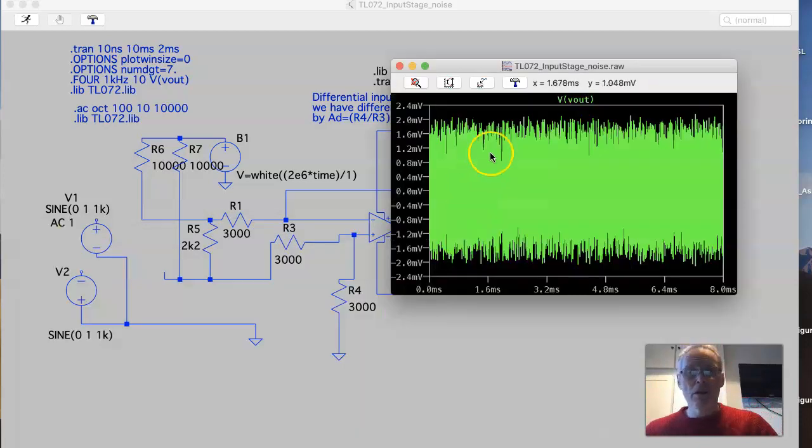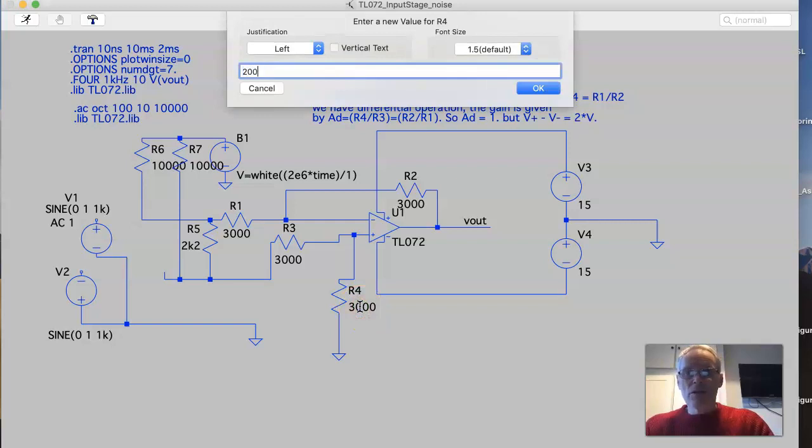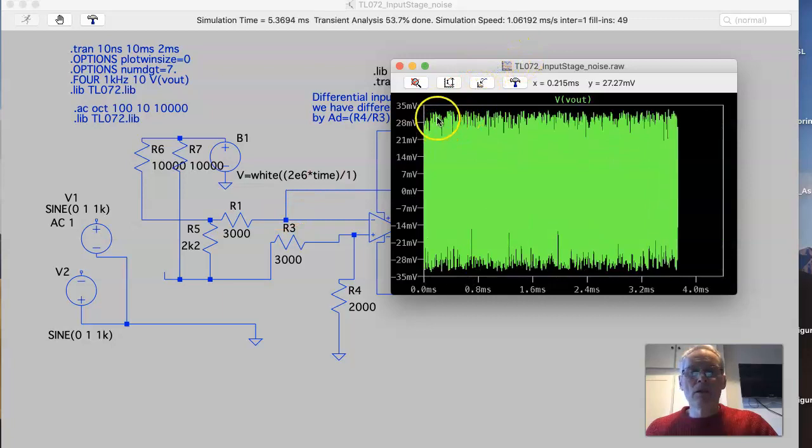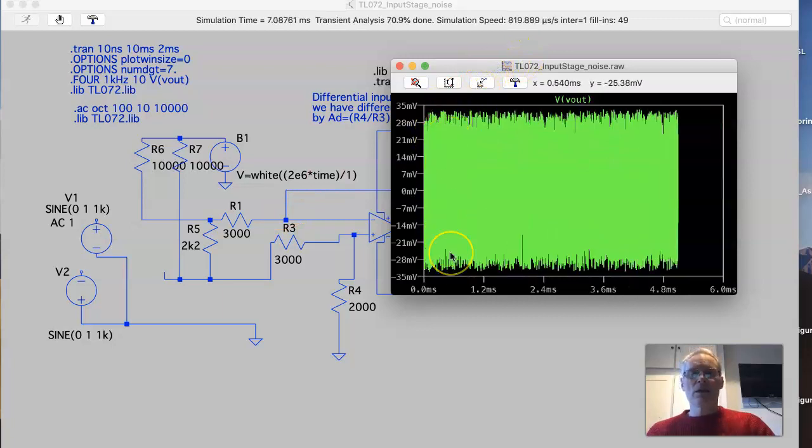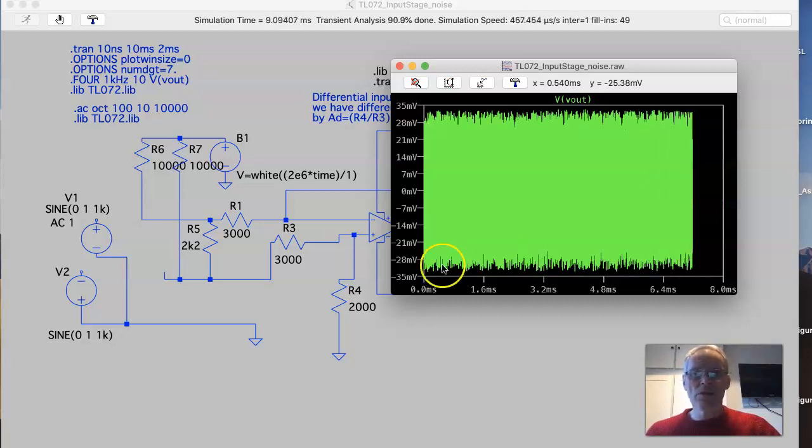To demonstrate what happens if there's a mismatch between the input impedances, if we change this one to say 2000 and run the analysis again, you'll see that the noise has indeed increased because there's now a mismatch between the impedances.